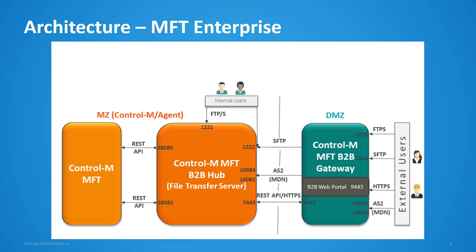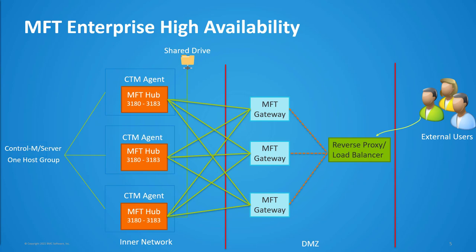B2B gateway listens for incoming SFTP, FTPS, HTTPS, and AS2 connection requests from external users and redirects them to B2B hub or the file transfer server on the Control-M agent. B2B gateways do not store any transfer data, but gateways do host the B2B web portal application which allows external users to log in and view the content of their virtual folders, as well as download and upload files. Starting with MFT Enterprise 9.0.20, high availability has been introduced for MFT hub and MFT gateway — we can now add multiple MFT hubs and MFT gateways creating an active-active cluster to make MFT Enterprise environments more reliable and increase performance and robustness of the file transfer server.